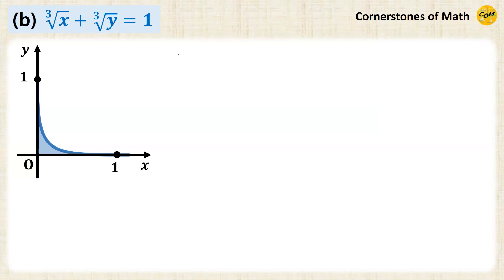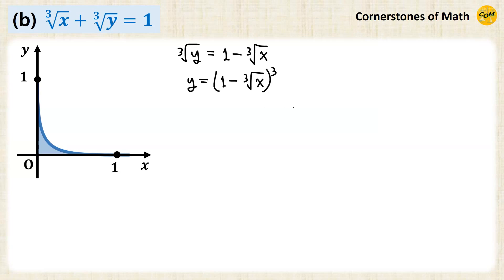Next: cube root of x plus cube root of y equals 1. We essentially do the same. First, express the equation of the graph in y equals f(x) form. So cube root of y equals 1 minus cube root of x, so y equals (1 minus cube root of x) cubed. Therefore, area A equals the integral from 0 to 1 of (1 minus x to the power of 1/3) cubed dx.